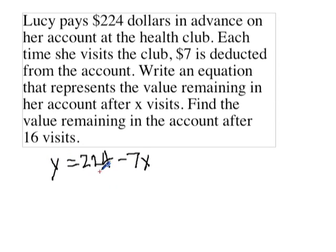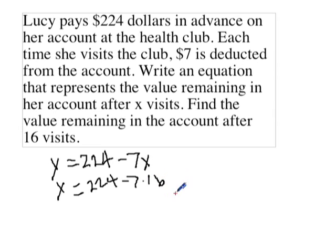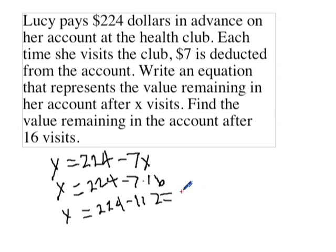She starts with $224 and subtracts 7 times the number of visits. Now it says to find the value remaining in the account after 16 visits, so we write the equation again and substitute 16 for X. 7 times 16 is 112. 224 minus 112 equals 112. So she's got $112 left after 16 visits.